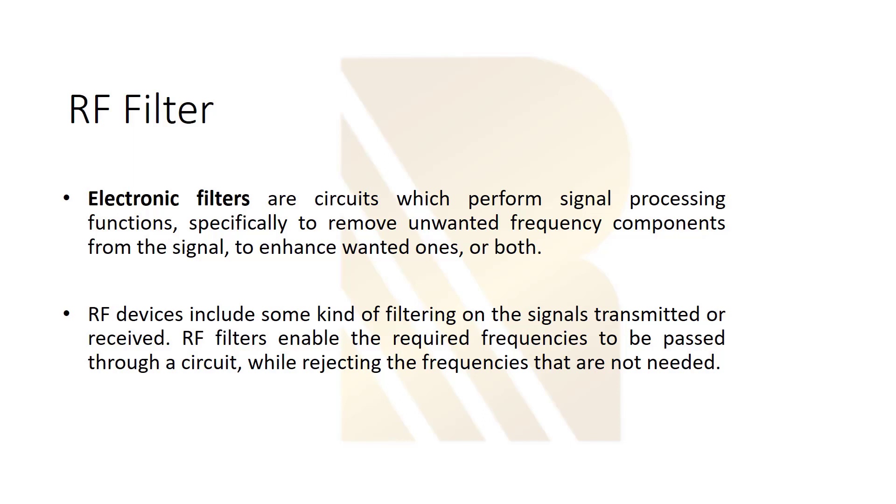RF devices include some kind of filtering on the signals transmitted or received. RF filters enable the required frequencies to be passed. We talk about the required frequencies. It means that the system is designed to operate at a specific frequency. It can be a single frequency or a specific frequency range.